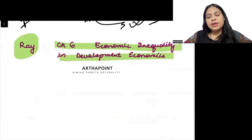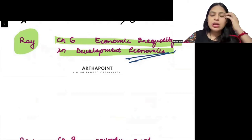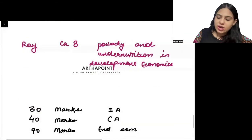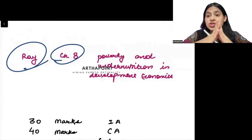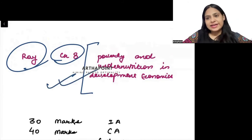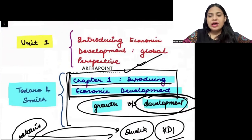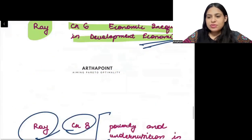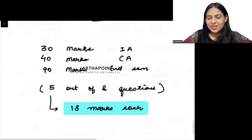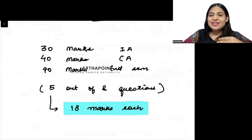Next is Chapter 6 on Economic Inequality in the Developing Economies — not just economics, but economies — where we will talk about economic inequality in developing economies. Then we have Chapter 8, which talks about the link between poverty and under-nutrition: how poverty and under-nutrition are linked with each other. This is a very interesting unit and there will be a lot of interesting discussions. It is theoretical, so students who don't love theory might feel sleepy — I'll try to make the sessions as interesting as possible with examples and stories.